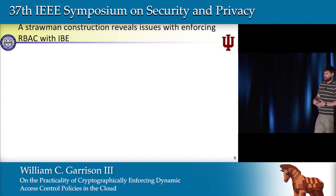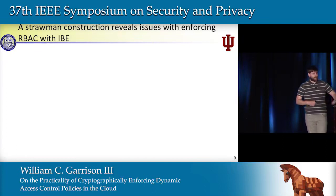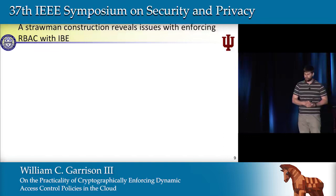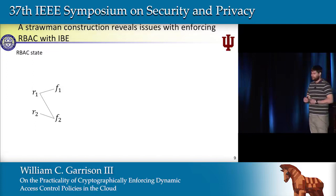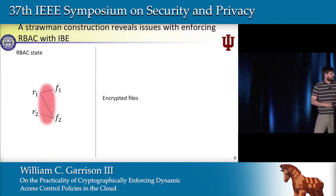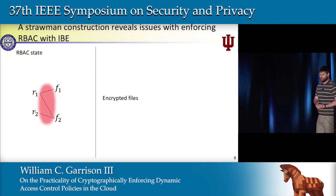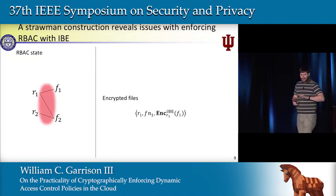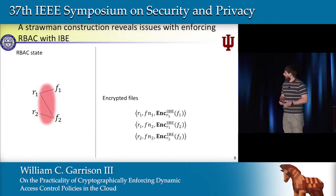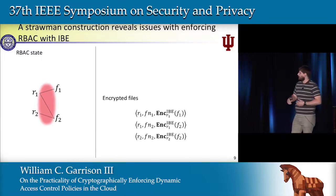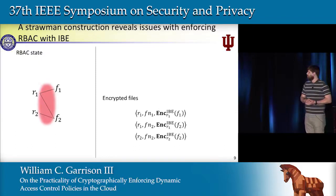Let's look at a strawman construction for enforcing RBAC using identity-based encryption, focusing on the PA relation. We can grant file accesses to a role by encrypting the file to a shared role identity. We encrypt file 1 to role identity R1, and encrypt file 2 to role identities R1 and R2 — which means we have to encrypt file 2 twice, to ensure users in both roles can access it.